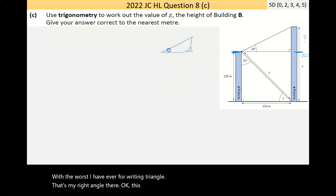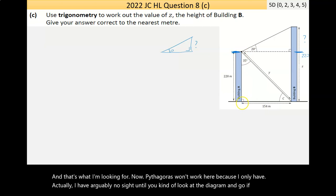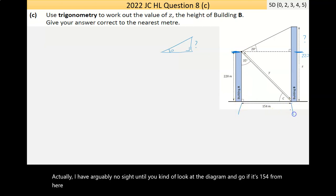If I kind of quickly draw it out to make it clearer, with the worst diagram ever for a right angle triangle, that's my right angle there. This is 20, and that's what I'm looking for. Now, Pythagoras won't work here, because I only have, actually, I have arguably no sight. Until you kind of look at the diagram and go, well, if it's 154 from here to here, isn't it 154 from here to here? So, that's 154, which on my diagram is the same thing.